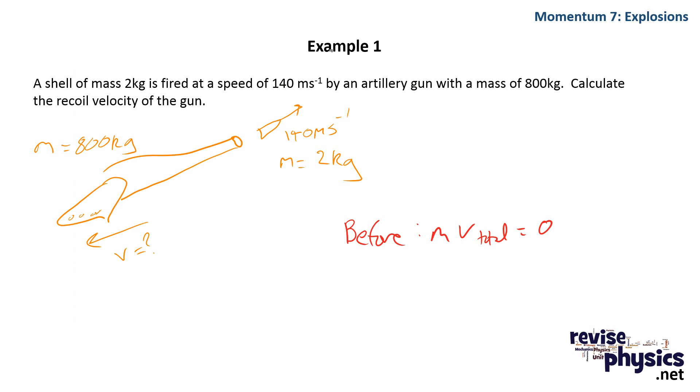So let's have a look at an example question. Here we're told that a shell of mass 2 kilograms is fired at a speed of 140 meters per second by an artillery gun with a mass of 800 kilograms. We're trying to work out what the velocity of the gun is.